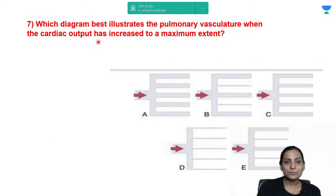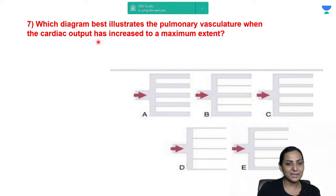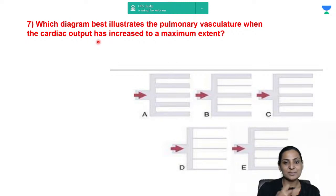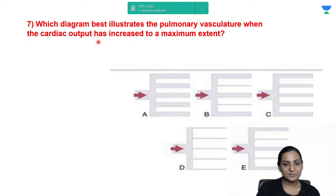Next: various diagrams A, B, C, D, E are given. Which illustrates the pulmonary vasculature when cardiac output has increased to its maximum? The question asks which figure depicts the pulmonary vasculature when there is increased cardiac output or increased pulmonary blood flow — as in a physiological condition like exercise.